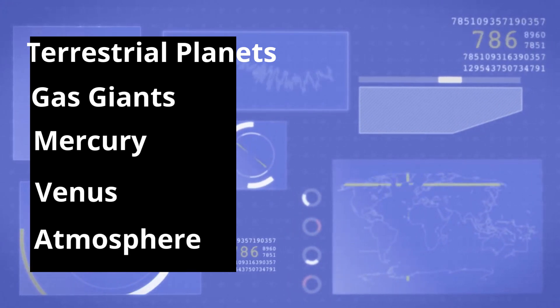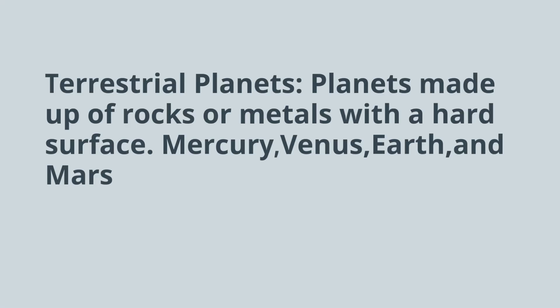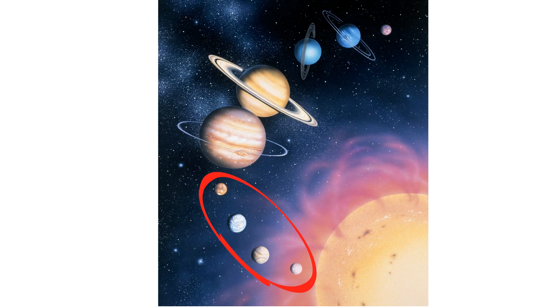Up first, terrestrial planets. These are planets made up of rocks or metals with a hard surface. They include Mercury, Venus, Earth, and Mars. And here, if you look at this picture, there are the terrestrial planets.